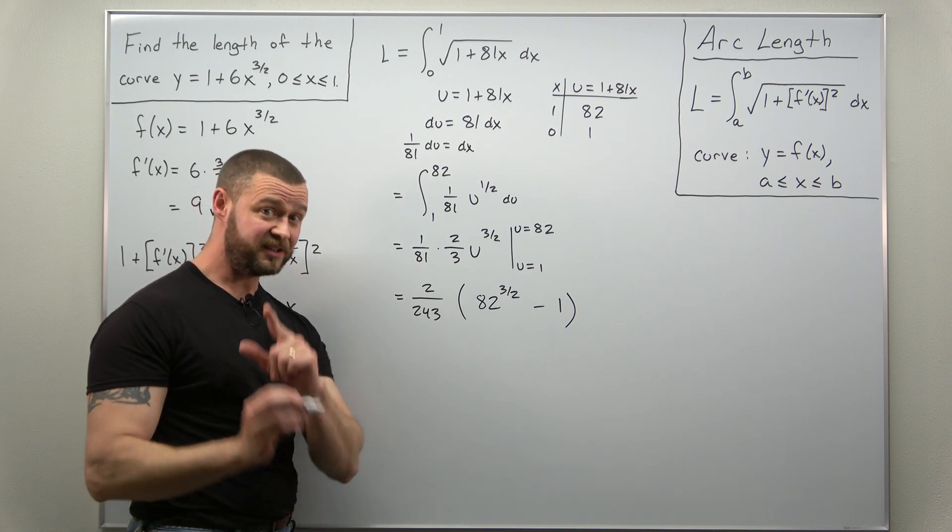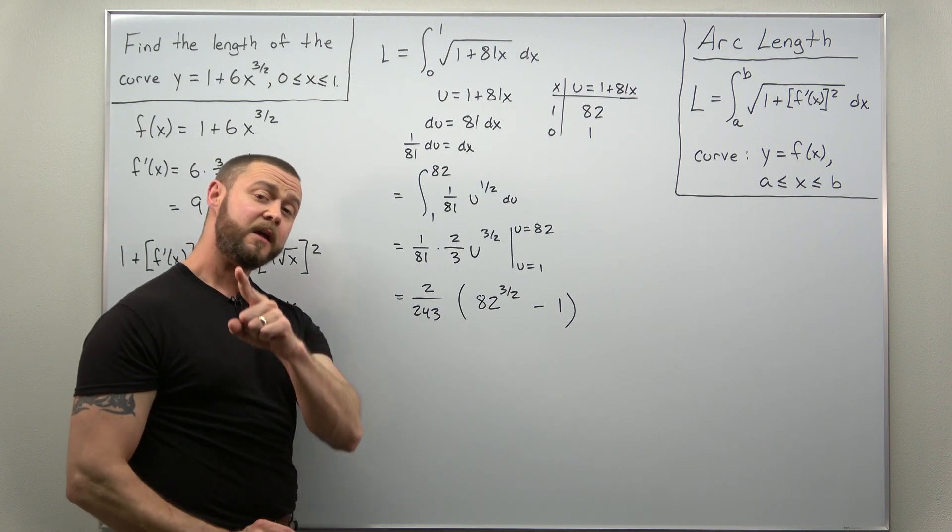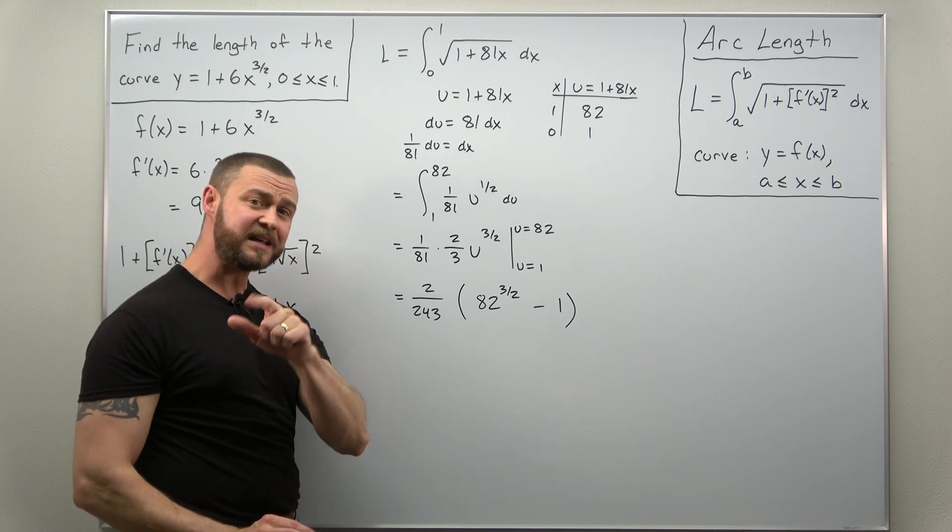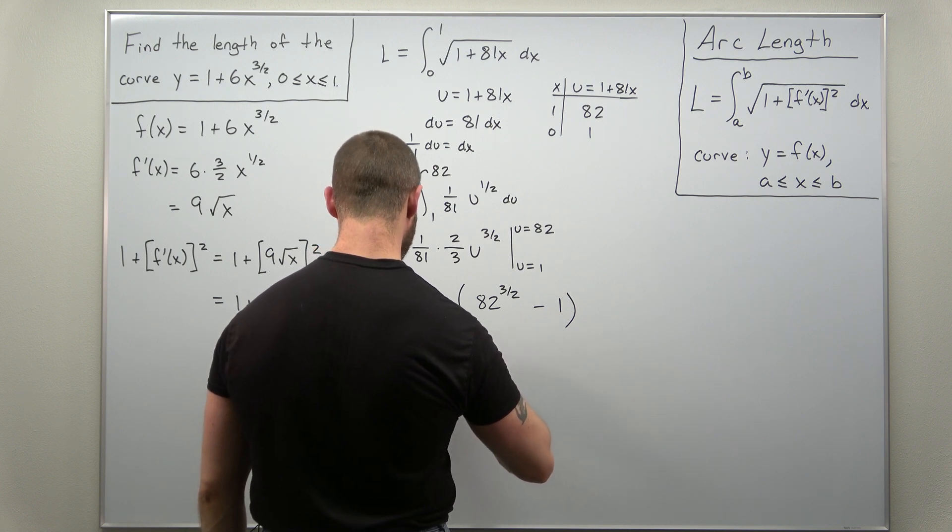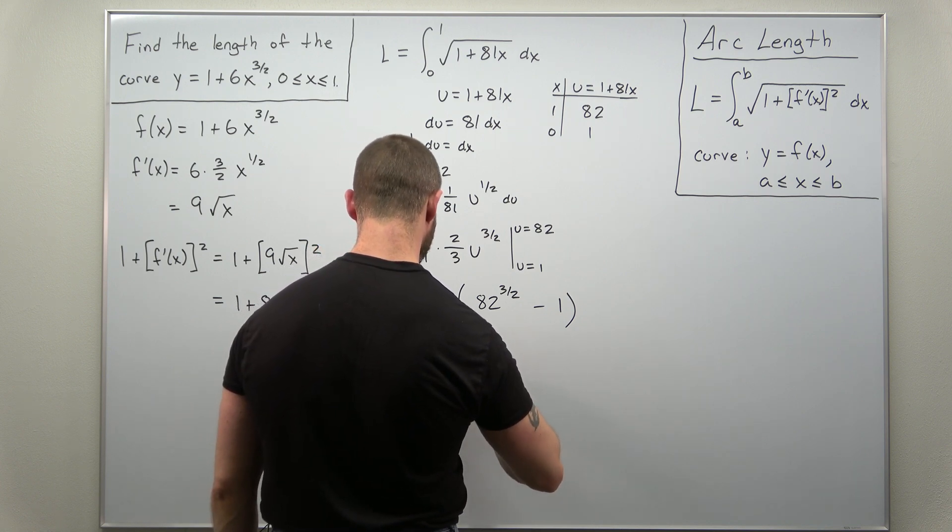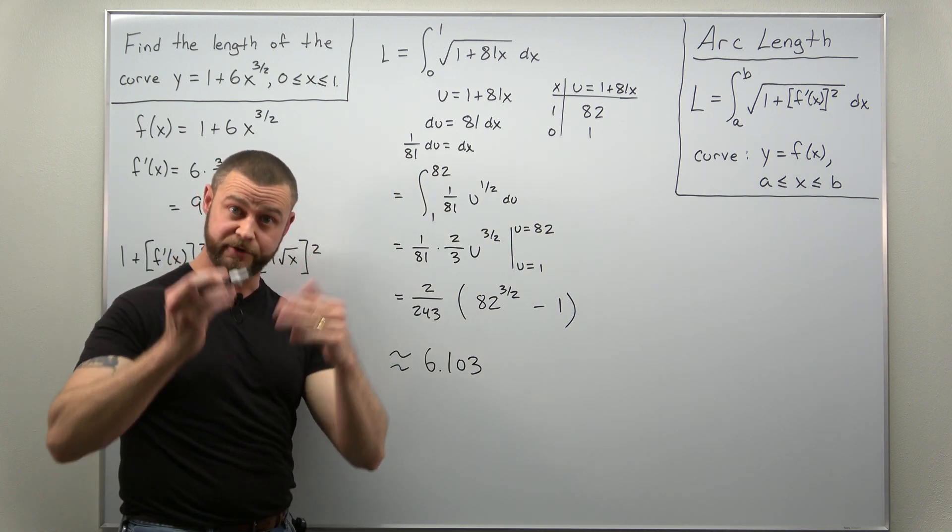And that is it. This is the exact value for the arc length integral here. If your professor is looking for an approximate decimal value, this comes out approximately to 6.103. And that would just be units of length, whatever units you're using.